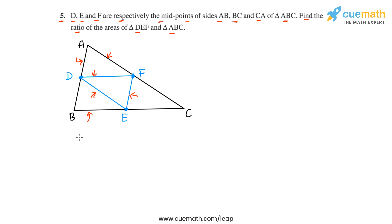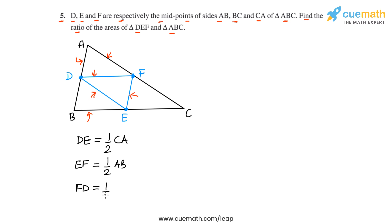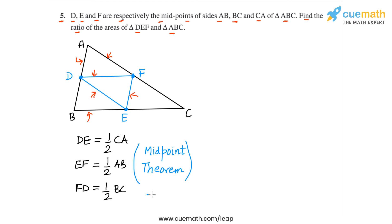Using the midpoint theorem, we can say that segment DE joins the midpoints of AB and BC, so it will be equal to half of the third side. So DE will be equal to half of CA. And EF will be equal to half of AB — observe the relevant segments in the figure carefully. Similarly, FD will be equal to half of BC. The reason for all of these equalities is the midpoint theorem, which says that if you join the midpoints of any two sides of a triangle, the segment you get will be parallel to the third side and equal to half of the third side. Let's call all of these equalities set 1.